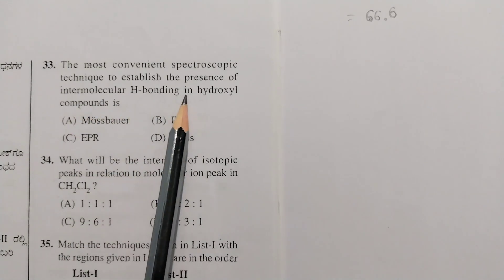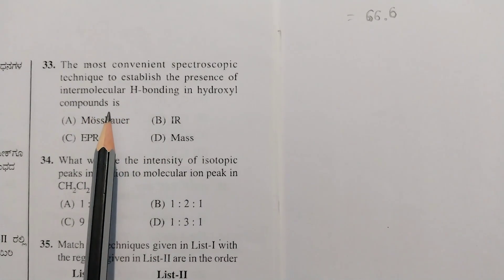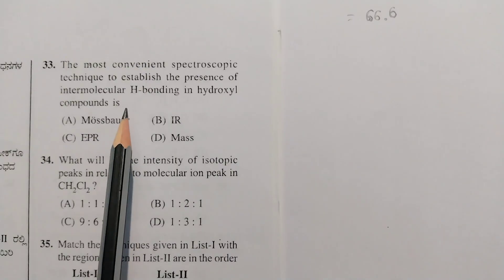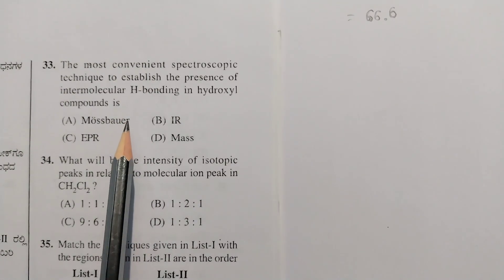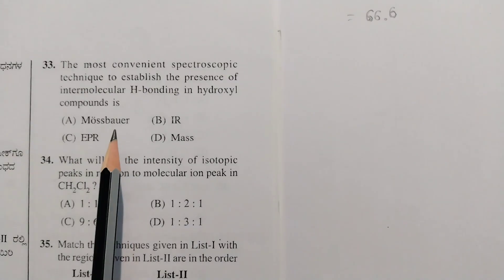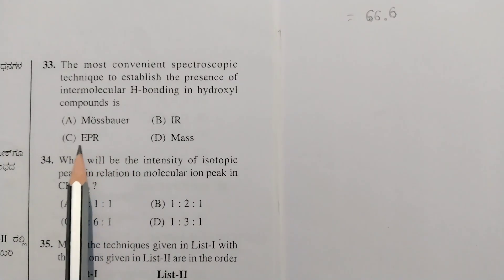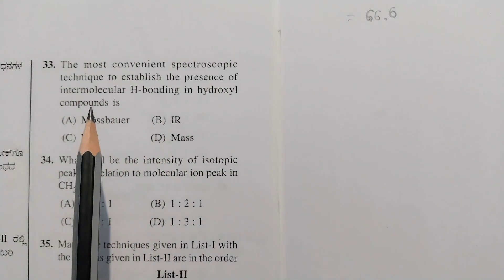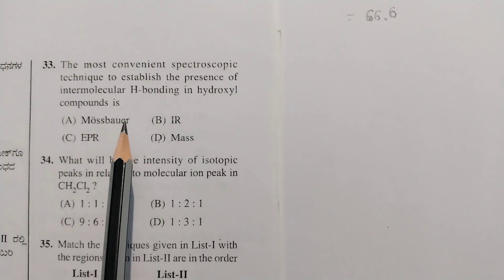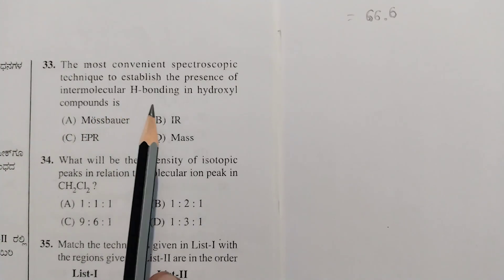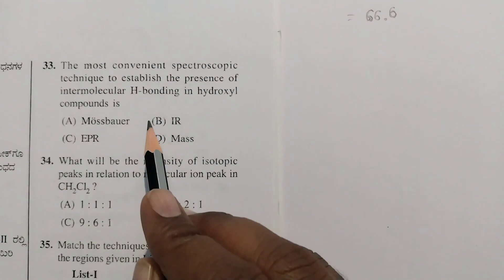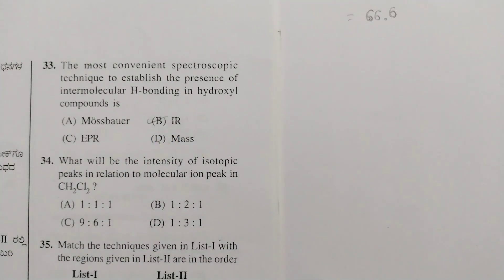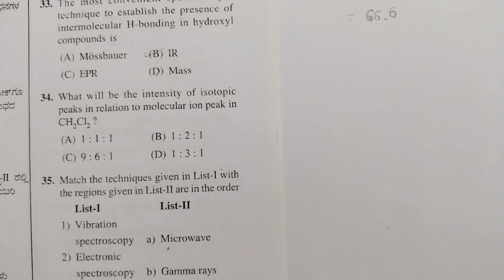Next question: what is the most convenient spectroscopic technique to establish the presence of intermolecular hydrogen bonding in hydroxyl compounds? Mossbauer and EPR use only indirect information about intermolecular hydrogen bonding, but IR and NMR — especially IR — give direct information. Therefore IR is the correct answer; option B is correct.